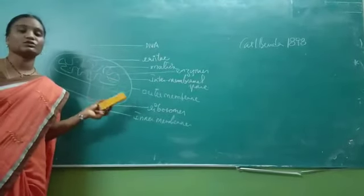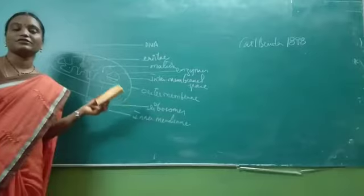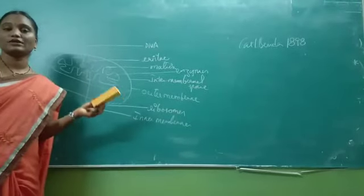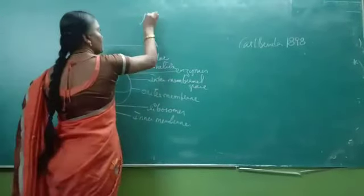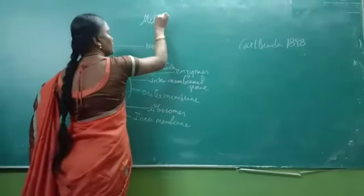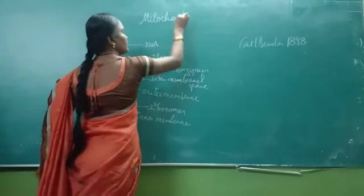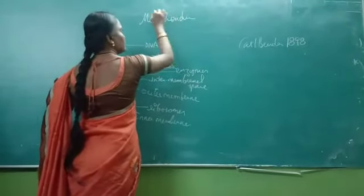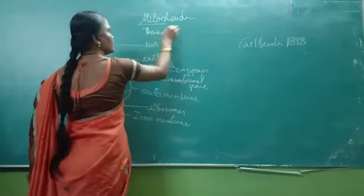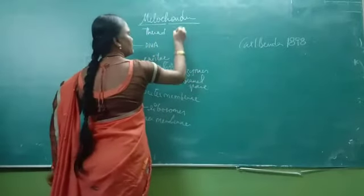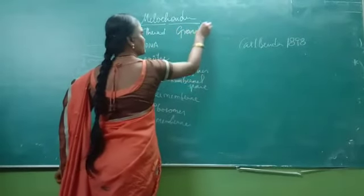Mitochondria is known as a double membrane bound granular structure. As I said earlier, mitochondria is nothing but — mito means thread and phondrium means granule-like structure.